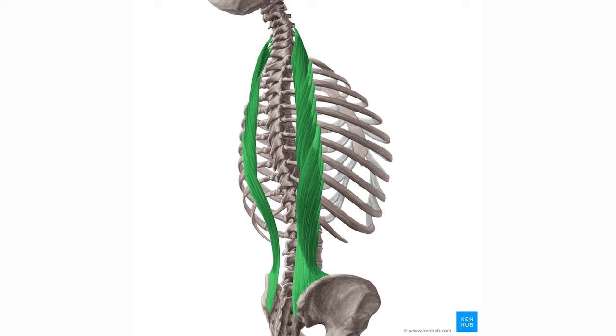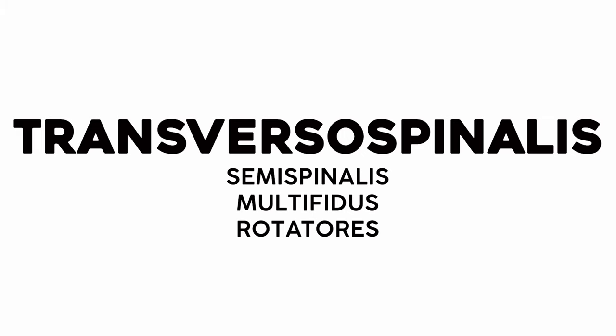The erector spinae has one more detail before we're done with it: each of these long muscles is made of tinier segments. Like the iliocostalis has three sections that line up with each region of the spine — lumbar, thoracic, and cervical. Having this kind of segmentation allows us to move sections of our back independently. The erector spinae group is the big superficial muscle group, but underneath it lies the more delicate transversospinalis group, made up of the semispinalis, multifidus, and rotators.